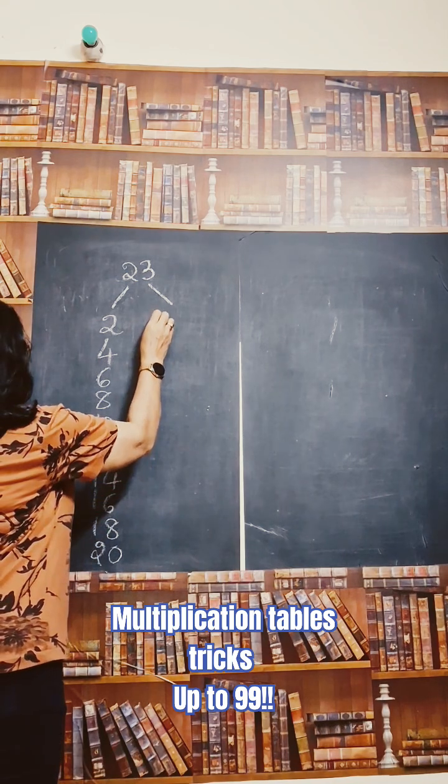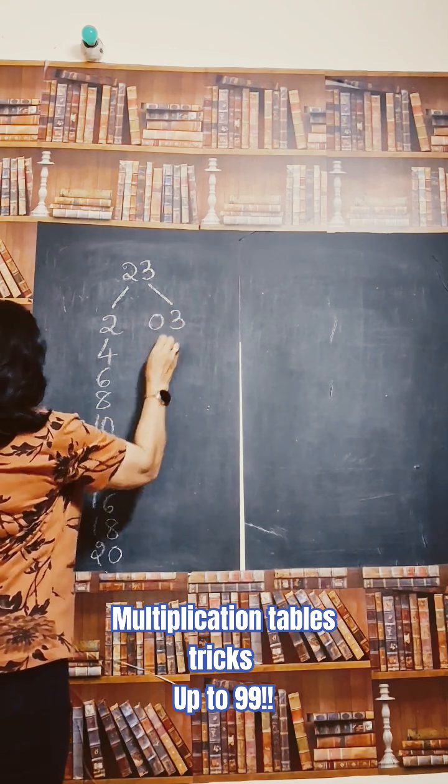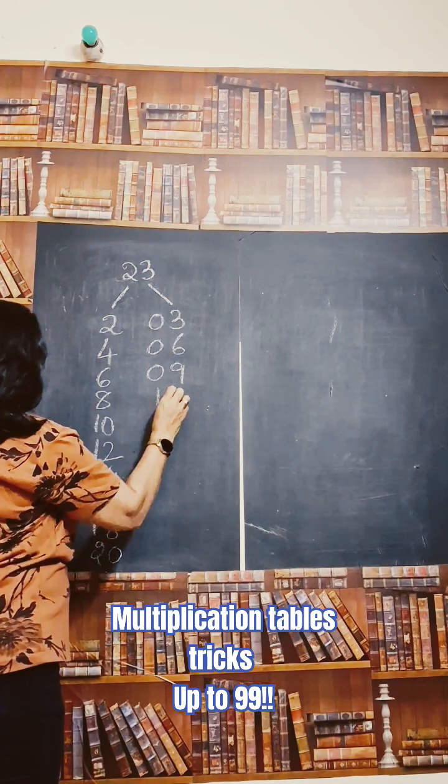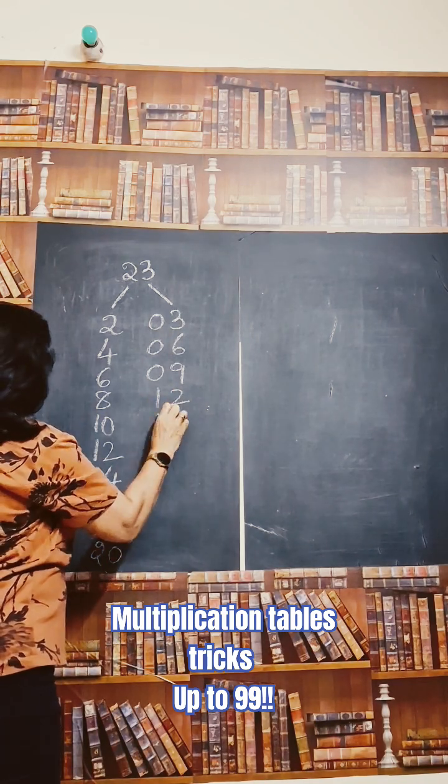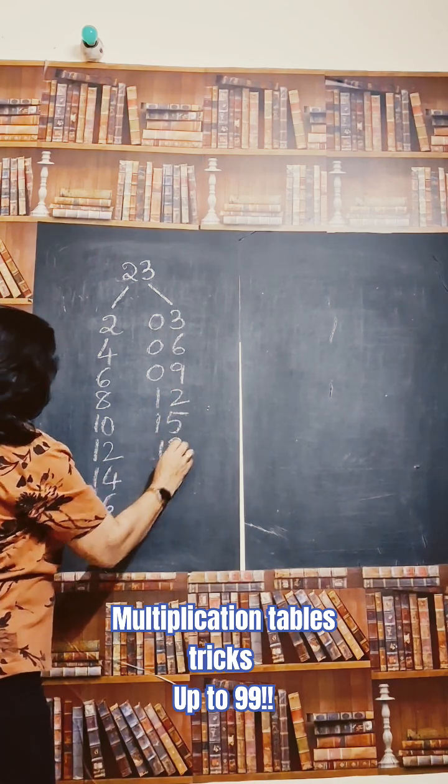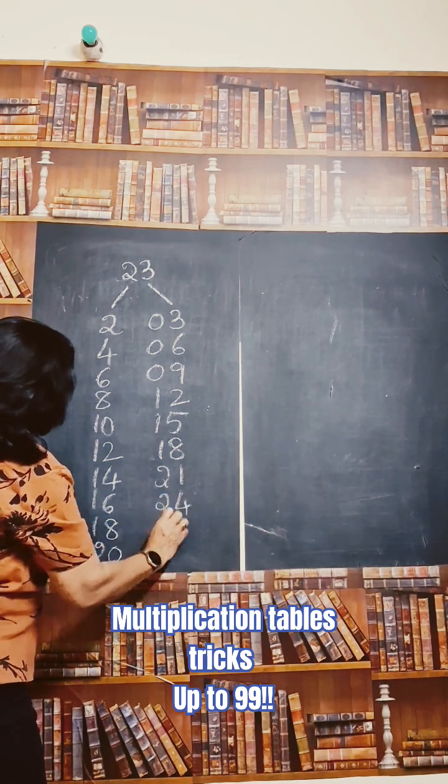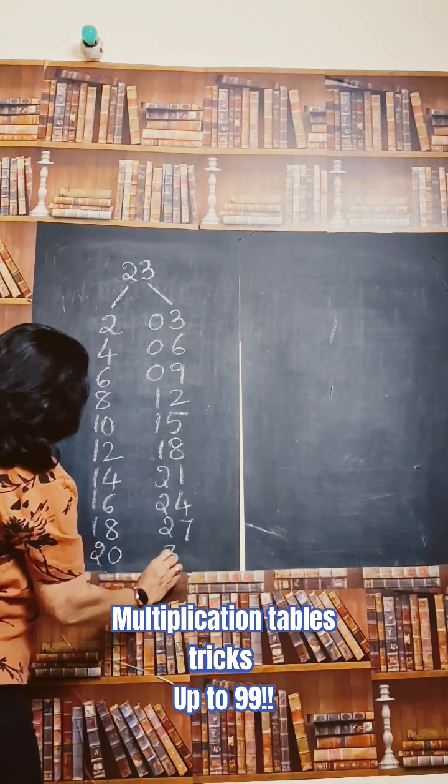Write 3 tables. I will write it as 3, 6, 9, 12, 15, 18, 21, 24, 27 and 30.